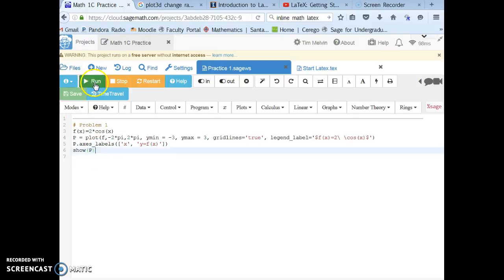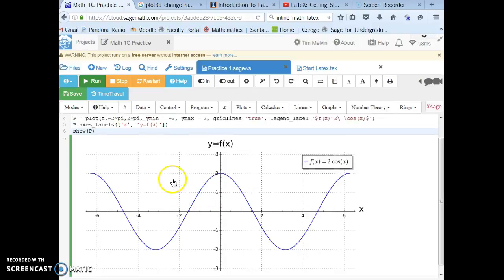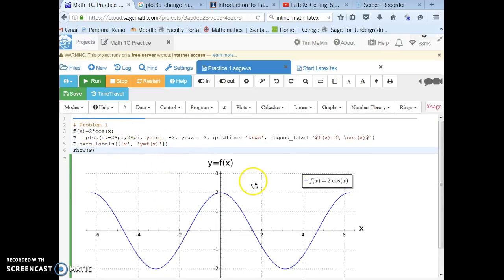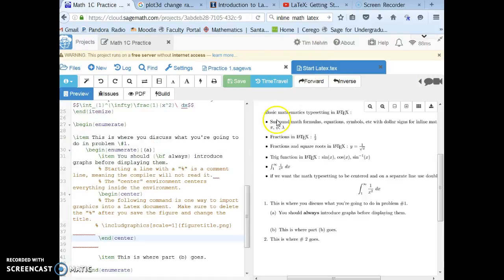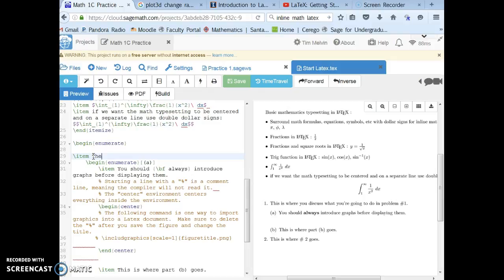So I have this written already in my Sage worksheet right here. If I click on run, I should get this picture right here of 2cos(x). Looking at the LaTeX file setup in the last video, I want to add that. This is number one.